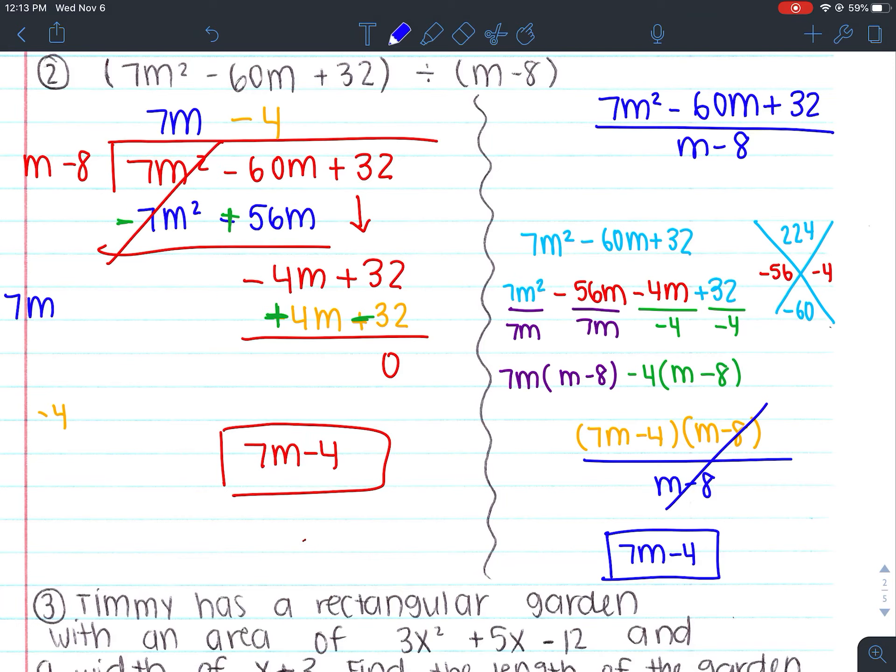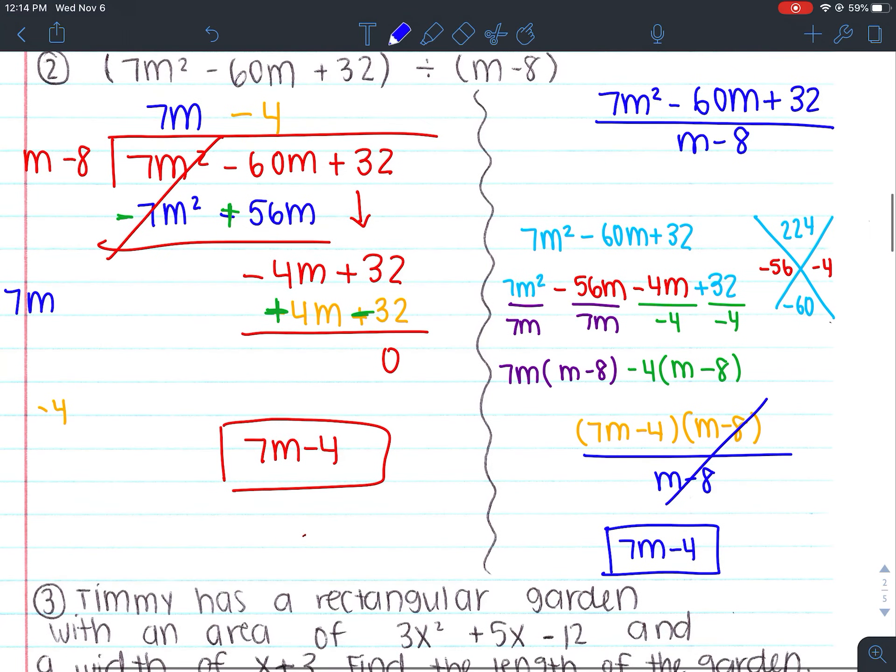So again, we didn't necessarily call it the shorter way, but it is the more comfortable way because we are used to factoring, right? It's not just called the factoring method. It's the factor and reduce. So make sure you're actually reducing at the end. You don't want to factor and then box this as your answer because that's not your answer. But that is the other method. If you have any questions, please feel free to come in for tutoring.